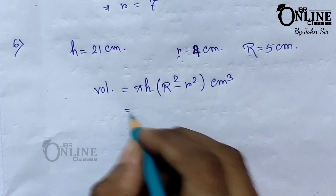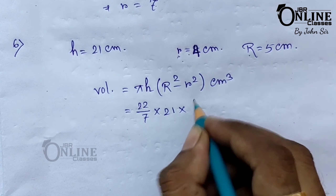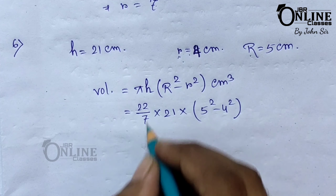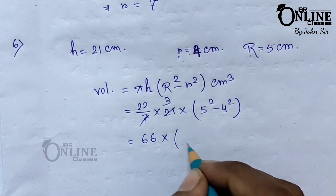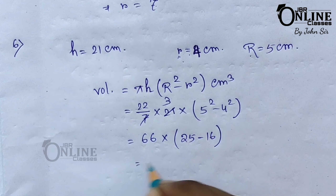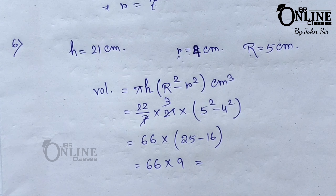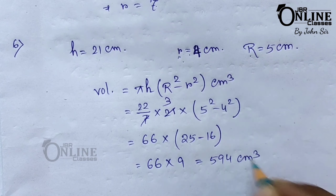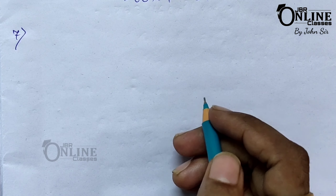The formula for volume of a hollow cylinder is pi h(R squared minus r squared). So: 22/7 × 21 × (5 squared minus 4 squared) equals 66 × (25 minus 16) equals 66 × 9. The answer is 594 centimeter cube.